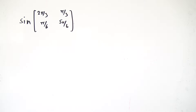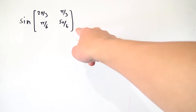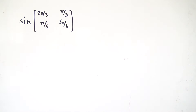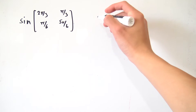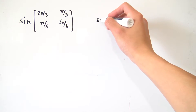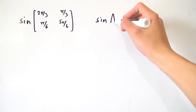Hello everybody, and today we're going to be having a look at how we can define the sine of a matrix. We're going to be dealing with two-by-two matrices in this video, but you can extend it out to any n-by-n matrix you want. Before we get into this example, we want to take a look at a more general case — namely the sine of just some random matrix, let's call it A.